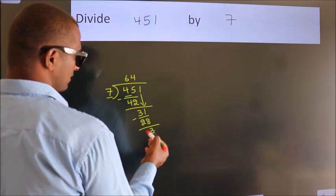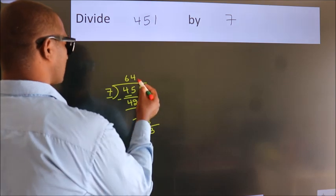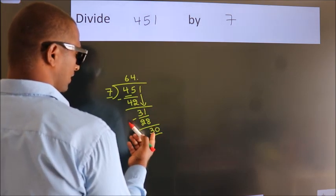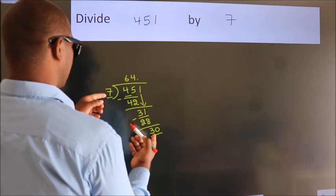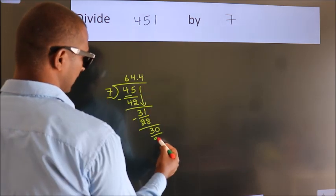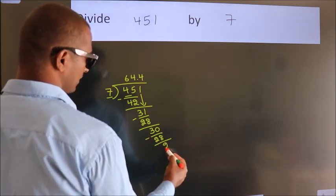After this, no more numbers to bring it down. So what we do is, we put dot, take 0. So, 30. A number close to 30 in the 7 table is 7 times 4 equals 28. Now we subtract. We get 2.